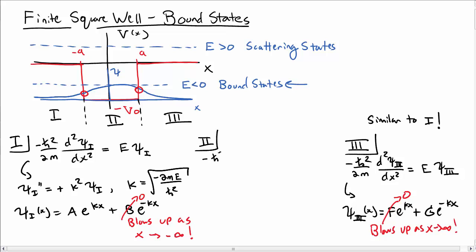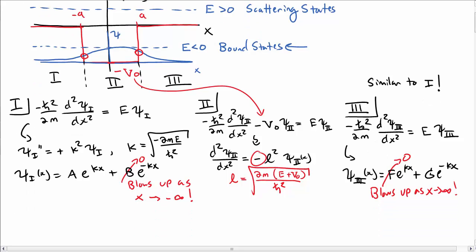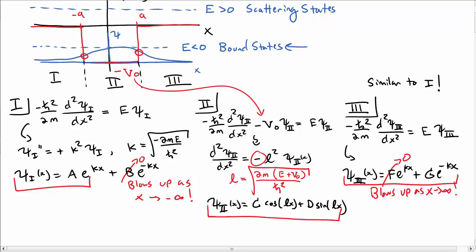Let's look at region 2. Inside region 2, I have minus h-bar squared over 2m times the second derivative of psi 2 with respect to x squared. I also have a potential term, minus V-naught psi — remember this V-naught is our potential and it's negative — equal to E psi 2. Moving the constants over, I can write this as the second derivative of psi 2 equals minus l-squared psi 2. Notice there's a minus sign here, and I've defined a new variable l, which is the square root of 2m(E plus V-naught) over h-bar squared. That is still going to be a positive number inside the square root. Solutions look like C cosine of lx plus D sine of lx, and I can't immediately rule either of them out.